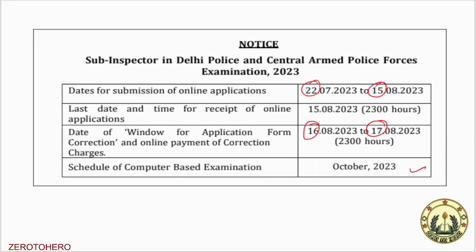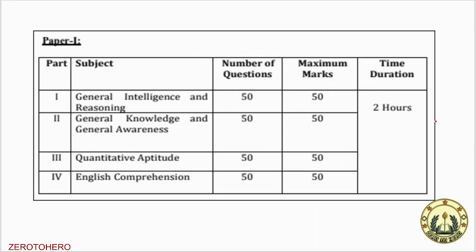This is the exam pattern. You can use Paper 1 and Paper 2. There are questions in the reasoning section. The knowledge and information sections are available in English. The time allotted is two hours. There is negative marking of one-by-three marks. These are objective type questions in English medium.